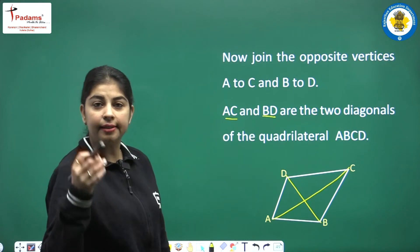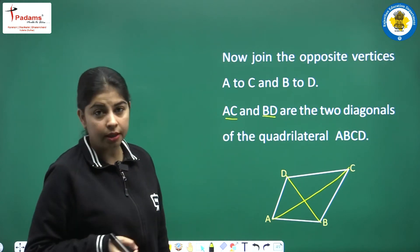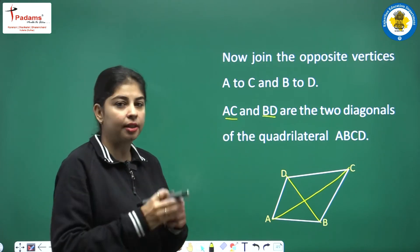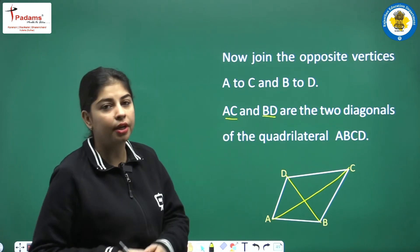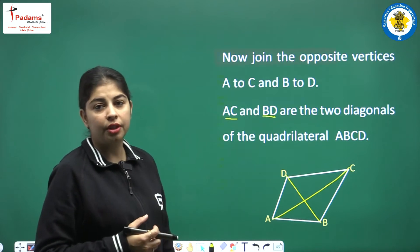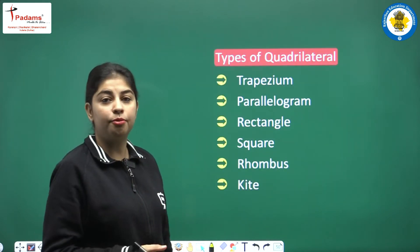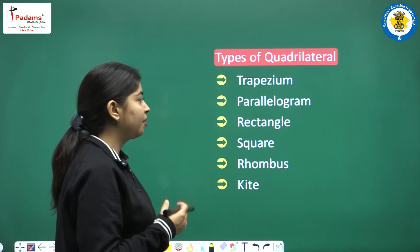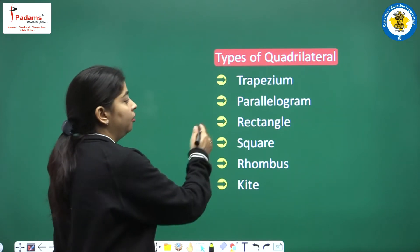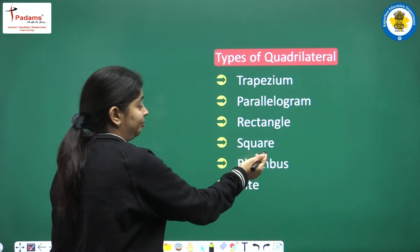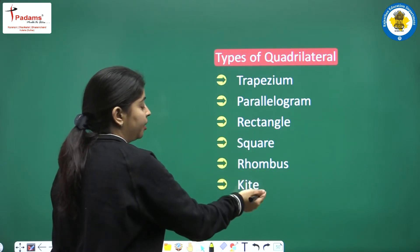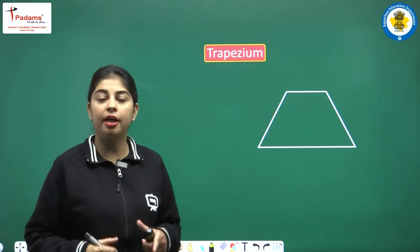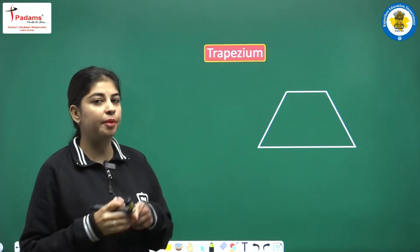So, hopefully quadrilateral is clear — it is a four-sided closed figure called a quadrilateral. It has 4 sides, 4 angles, and 4 vertices. Now we have different types of quadrilaterals. These are: trapezium, parallelogram, rectangle, square, rhombus, and kite.